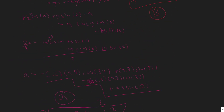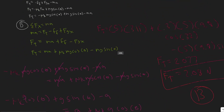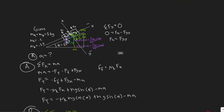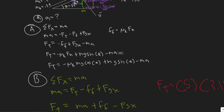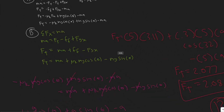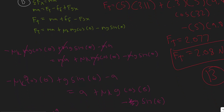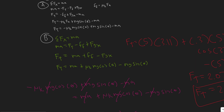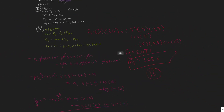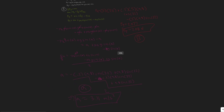So to recap: the acceleration is 3.11 meters per second squared — that's the answer to part A. The tension in the cord is approximately 2.08 Newtons — that's the answer to part B. The key trick was noticing both equations had F of T, so we could set them equal and solve for acceleration, then plug back in for tension.